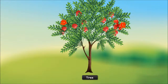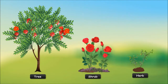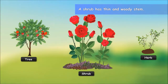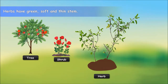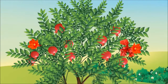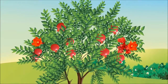The stem of a tree is also called a trunk. Unlike trees, shrubs and herbs do not have hard and strong stems. The stem of a shrub is woody but a lot thinner than that of a tree. Some shrubs, like a rose plant, have more than one stem. Herbs, on the other hand, have green, soft and thin stems.